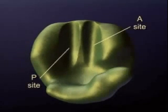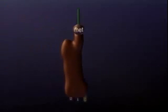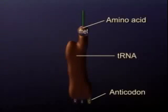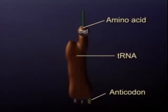The two binding sites on the large subunit are the P and A sites. Transfer RNA carries an amino acid which will be incorporated into the polypeptide. Its anticodon is a triplet complementary to the codon on messenger RNA that specifies that particular amino acid.